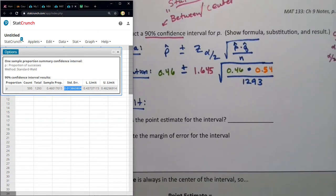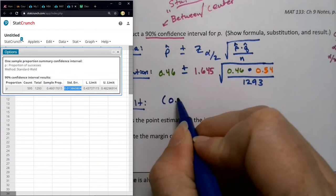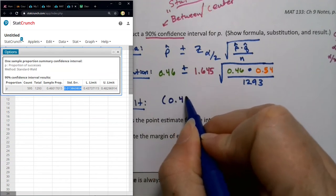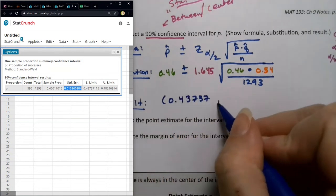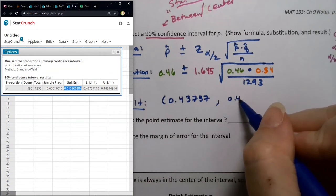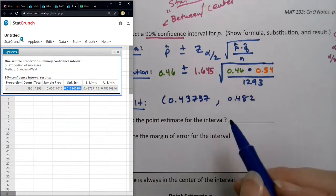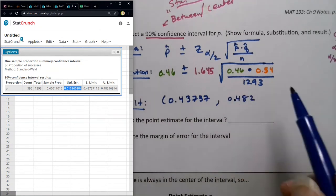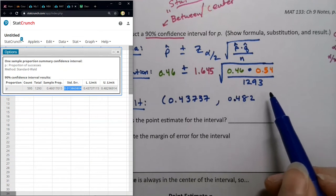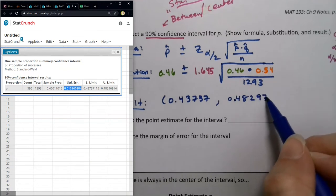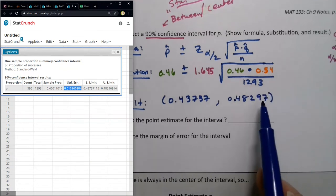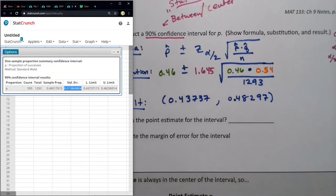All right. So my results, if I'm going to round it, would be, let's see, 0.43737. I'll go with that. And 0.482. All right, this is going to round a little weird. 482969, that would be 48297, right? Because that nine rounds that six up. Okay. So that was StatCrunch.